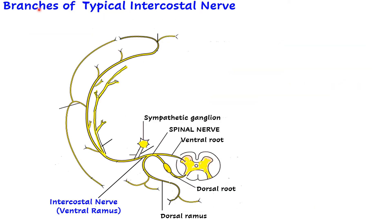Let us look at the branches of a typical intercostal nerve. Any mixed nerve will have sensory branches and motor branches. Motor branches supply the skeletal muscles, and sensory branches supply the different receptors mainly present in the skin. In addition, in the thoracic region we have sympathetic trunks, so the typical intercostal nerve also sends communicating branches to the sympathetic trunk. We therefore have three kinds of branches: communicating branches, motor branches, and sensory branches.